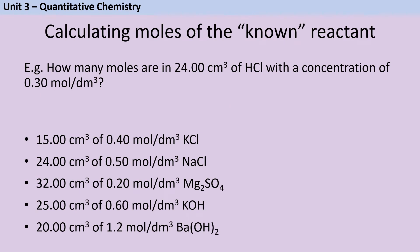You always start your titration calculation with whichever reactant you have two pieces of information about — the concentration and the volume. This will usually be the reactant that's been in your burette.